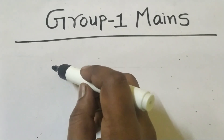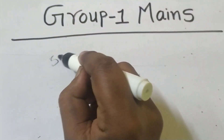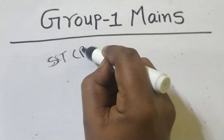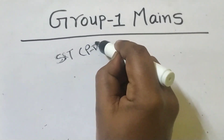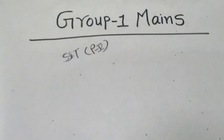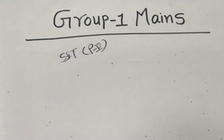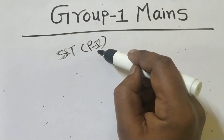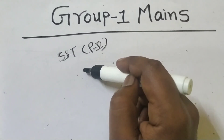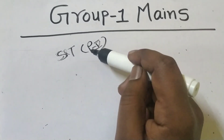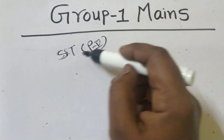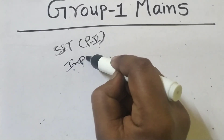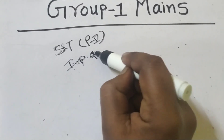Friends, I have a lot of information about science and technology. This is Paper 5. Paper 5 is a concept of science and technology — complete Paper 5 is a concept of science and technology. The most important questions are available on this topic.